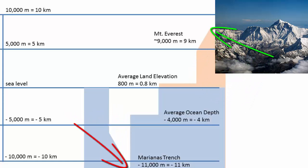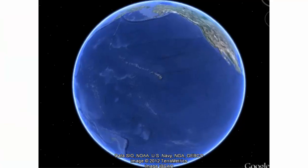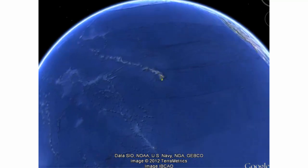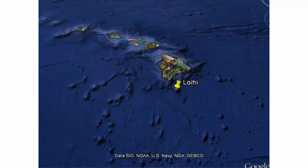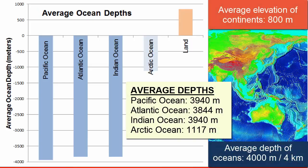In addition, the deepest spot is deeper by 2 kilometers than the highest point. What that means is that the oceans have much more vertical relief than the land. Here is another image that shows the average depths of the four major oceans and compares them to the average elevation of the continents. Again we see how many times deeper the oceans are, on average, than the land is high.